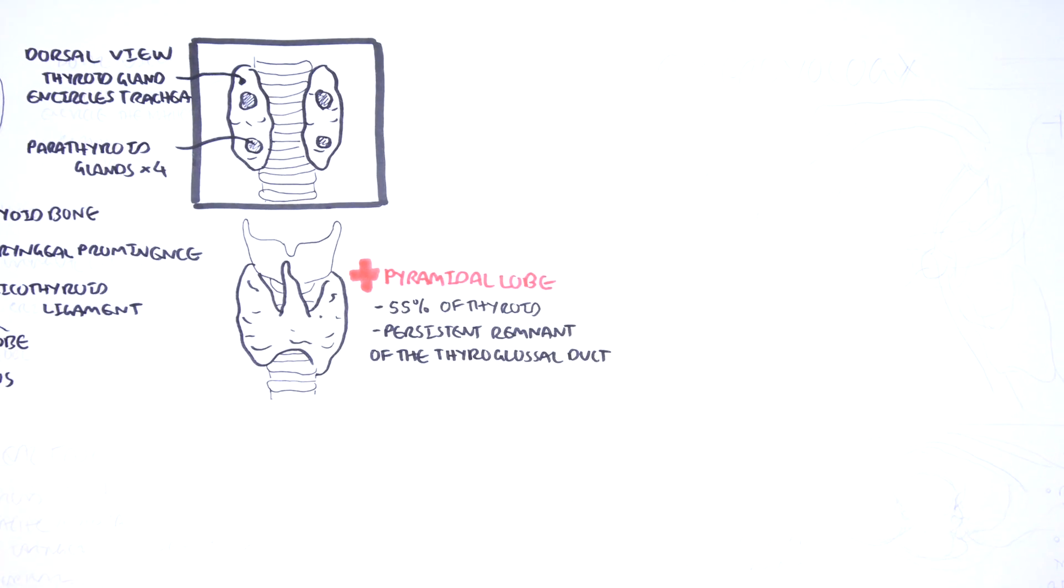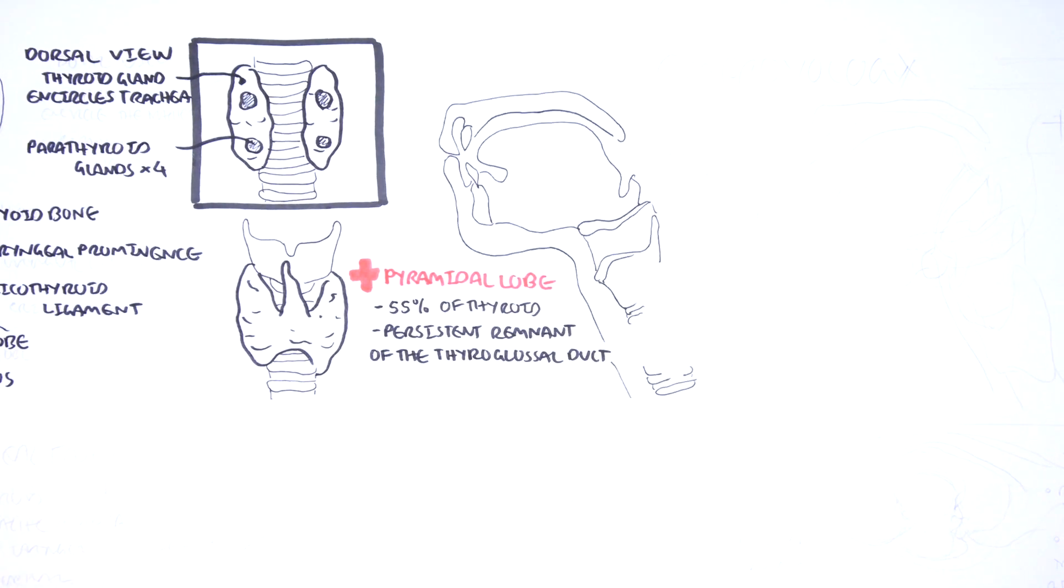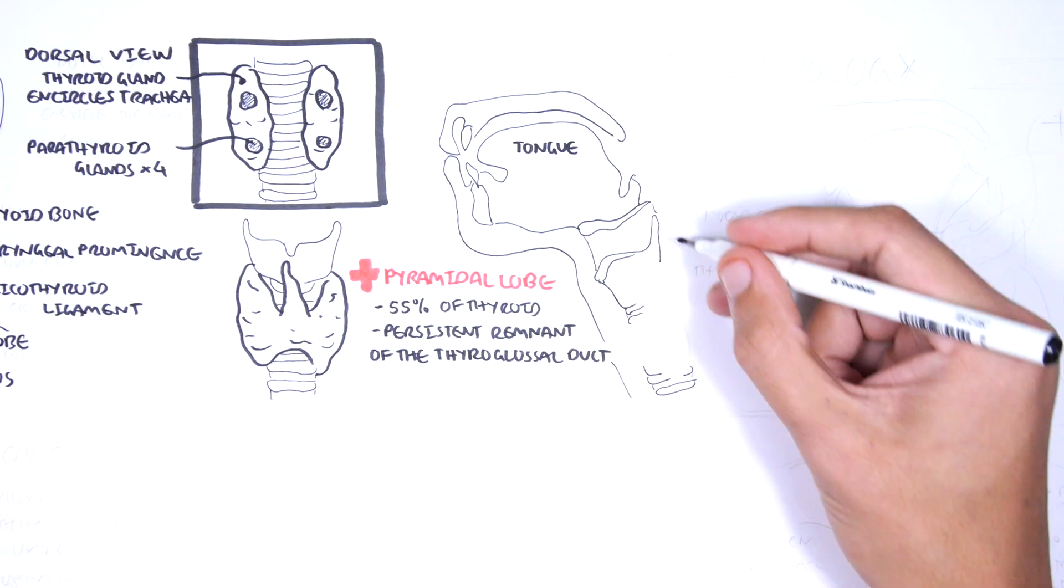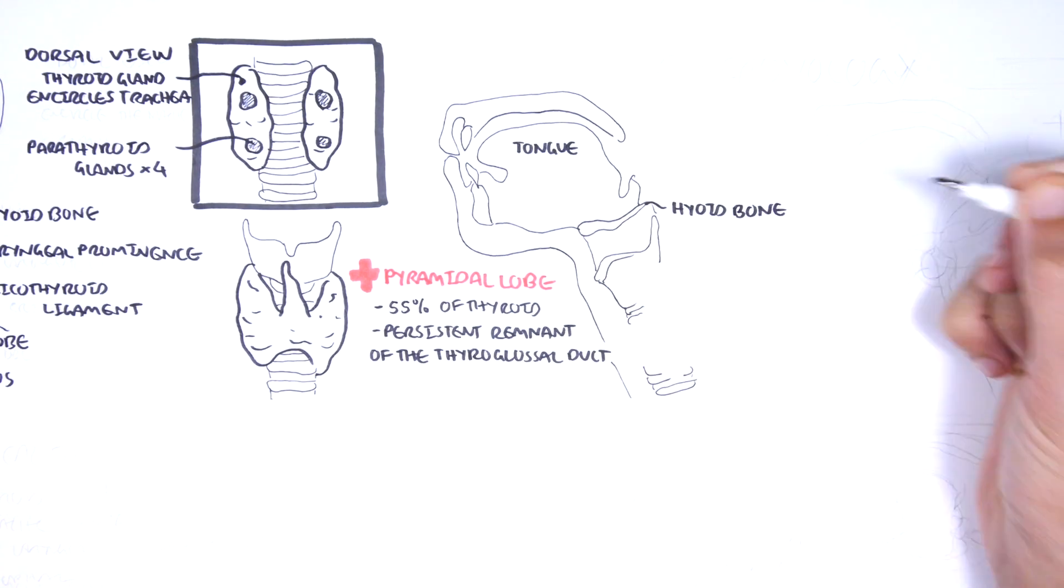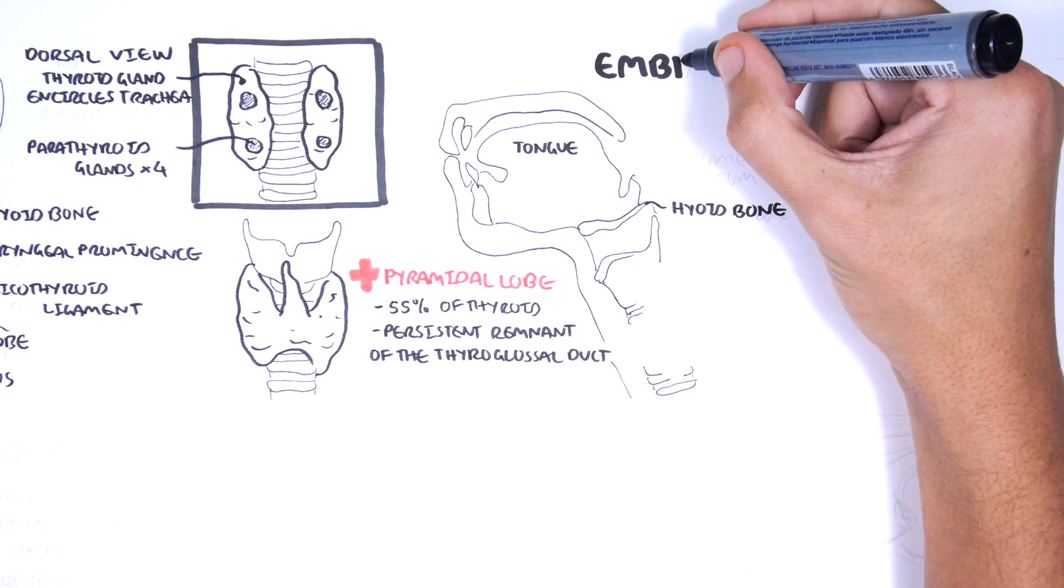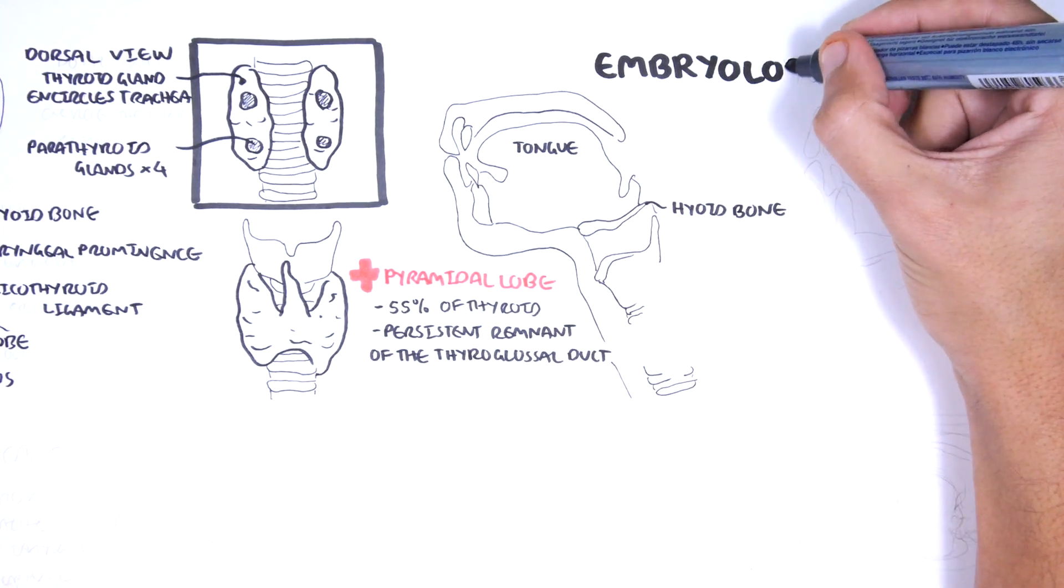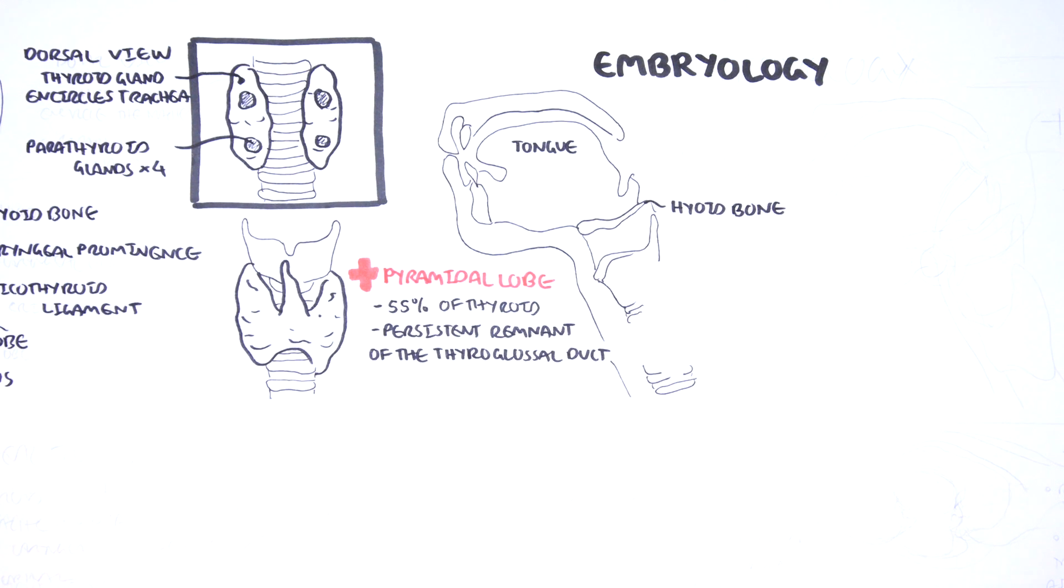The thyroid gland is one of the first endocrine organs to become active in humans, becoming active by the 24th week of gestation. This early activity is important because much of fetal organ development depends on thyroid hormone.